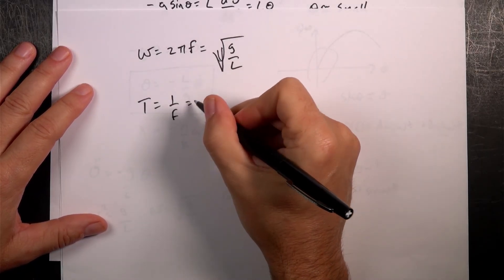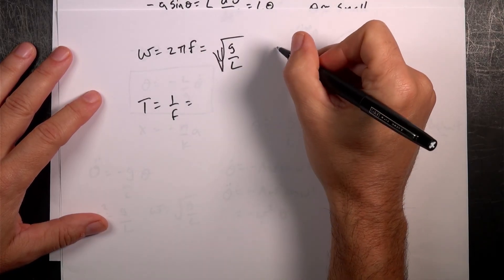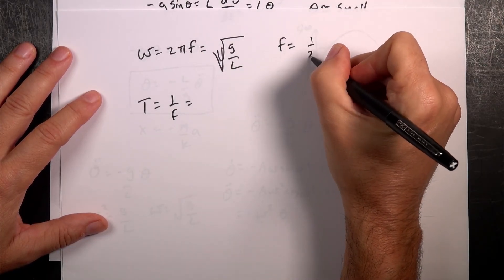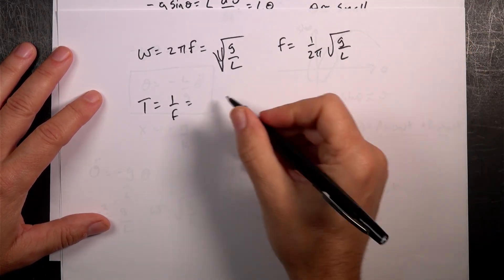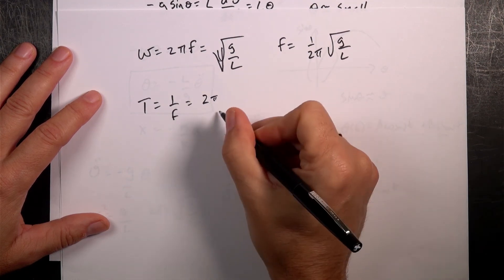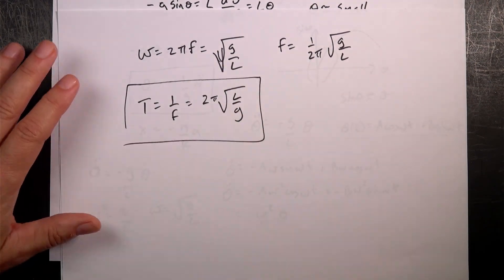So, this is going to be equal to, if I take the frequency, it is 1 over 2π square root of g over L. The period is going to be 1 over that, which is 2π square root of L over g.